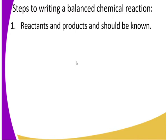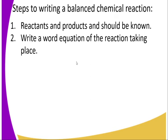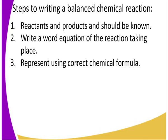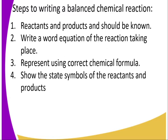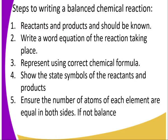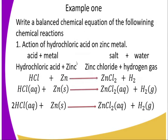What are the steps for writing a balanced chemical equation? Step one: reactants and products must be known. Step two: write a word equation first. Step three: represent reactants and products using correct chemical formulas. Step four: show the state symbols — solid, liquid, gas, or aqueous, which indicates ionic state in liquid form. Step five: ensure the number of atoms on the reactant side equals the product side.